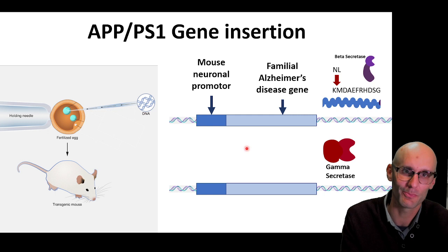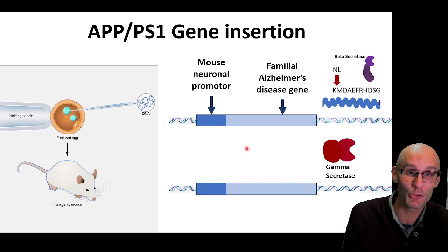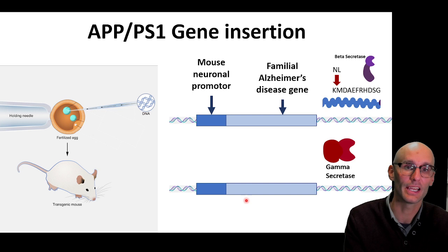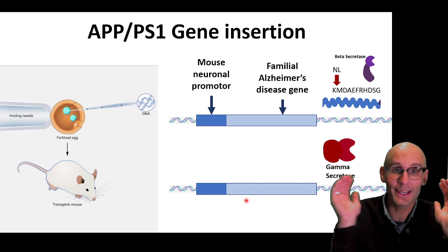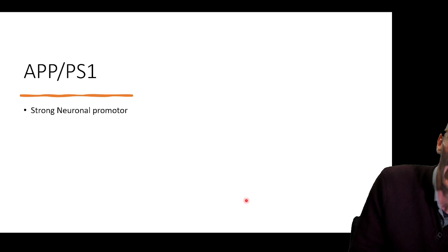In this case we have a mouse neuronal promoter and a familial Alzheimer's disease gene. One of the most common mouse models is called the APP PS1 gene insertion. For that, they use a mouse neuronal promoter and actually insert two different genes. One is for a familial Alzheimer's disease gene in the APP protein — this is called the Swedish mutation and it promotes beta secretase activity, causing the APP protein to be cleaved excessively by the beta secretase enzyme. The other gene we put in is a mutated gamma secretase that promotes cleavage at the other end of the APP to promote AB-42 production. So we're putting in two genes on a mouse neuronal promoter — one in the APP gene, one in the gamma secretase — to really guarantee that this mouse will get familial Alzheimer's disease. That's the APP PS1.